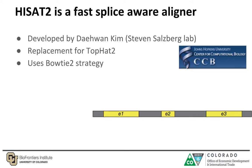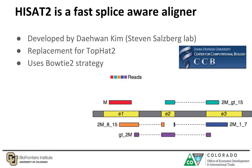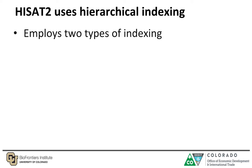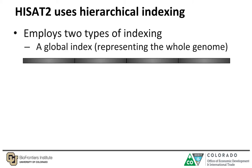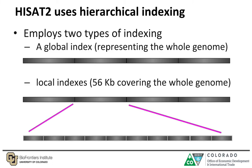Given a transcript with three exons, HISAT2 can map reads with various splicing characteristics. HISAT2 uses a hierarchical indexing and employs two types of indexing: the first one being a global index, which tends to represent the whole genome, and the second being local indexes, which are 55 KB regions covering the whole genome.